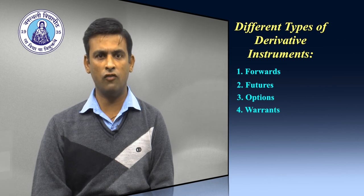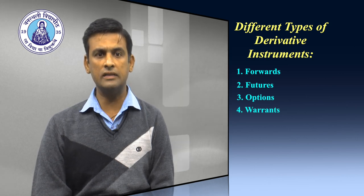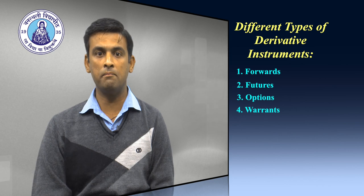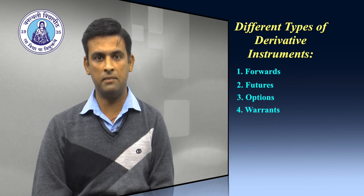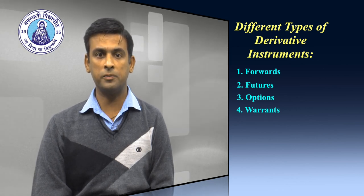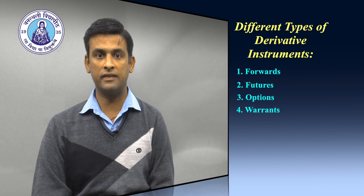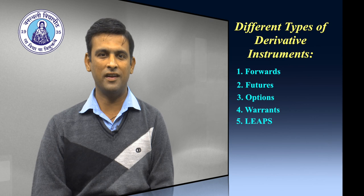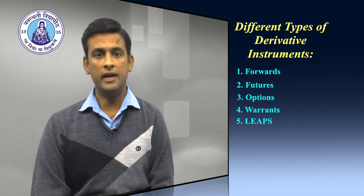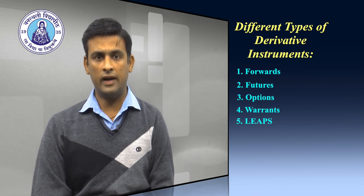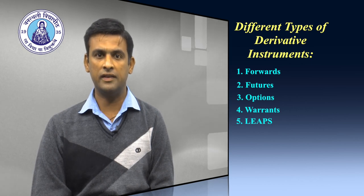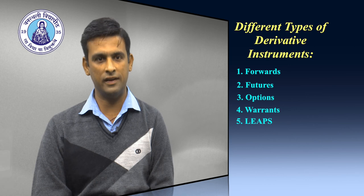The next one is the warrant. Options generally have a life of up to one year. The majority of options traded on option exchanges have a maximum maturity of 9 months. Longer dated options are called warrants and are generally traded over the counter. LEAPS are the acronym for Long Term Equity Anticipation Securities. These are options having a maturity of up to 3 years.